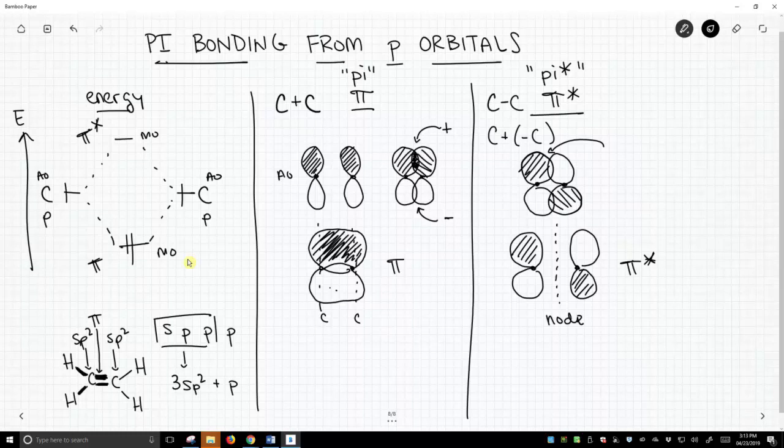So again, we put in two atomic orbitals, the two p's, and we get two new molecular orbitals. This is our pi star. That's not a good place for electrons because there's very low probability of finding the electron between the two nuclei, and we get a high energy orbital.